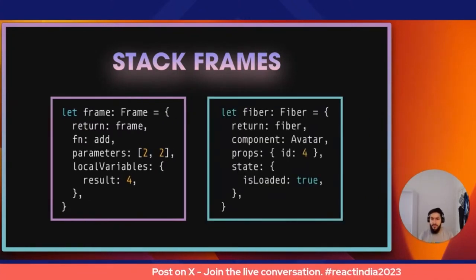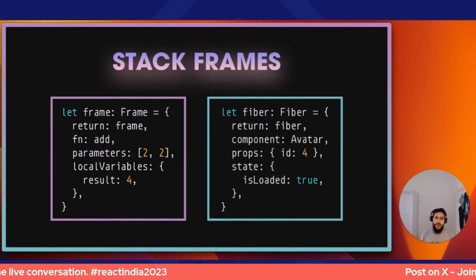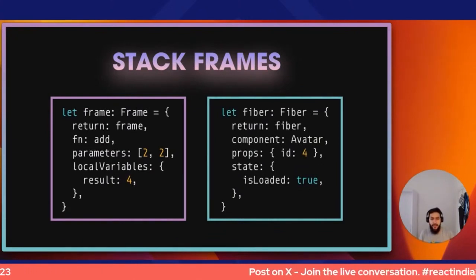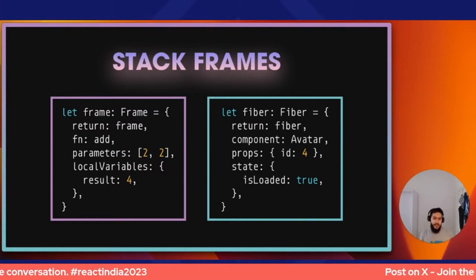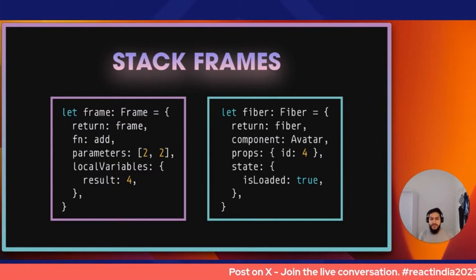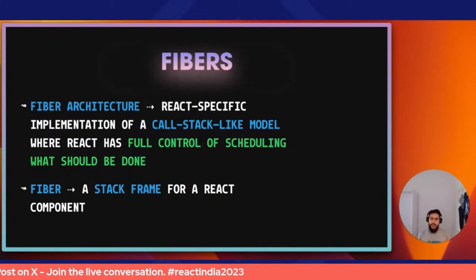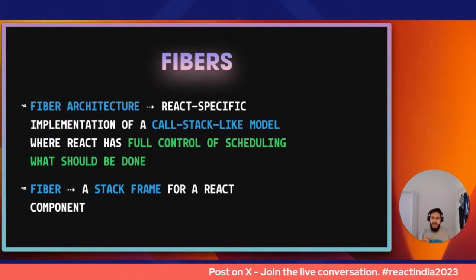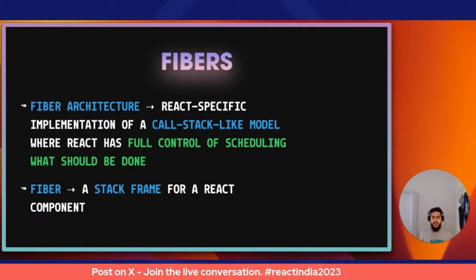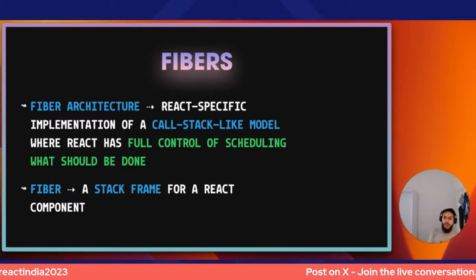We can have something similar for a React component: instead of a return we have a fiber, instead of a function we have a component like Avatar, instead of parameters we have props, and instead of local variables we have state — from a hook or a class component. Fiber as an architecture model is React's specific implementation of a call-stack-like thing that gives React full control of scheduling. A fiber on its own is essentially a stack frame for a given component.